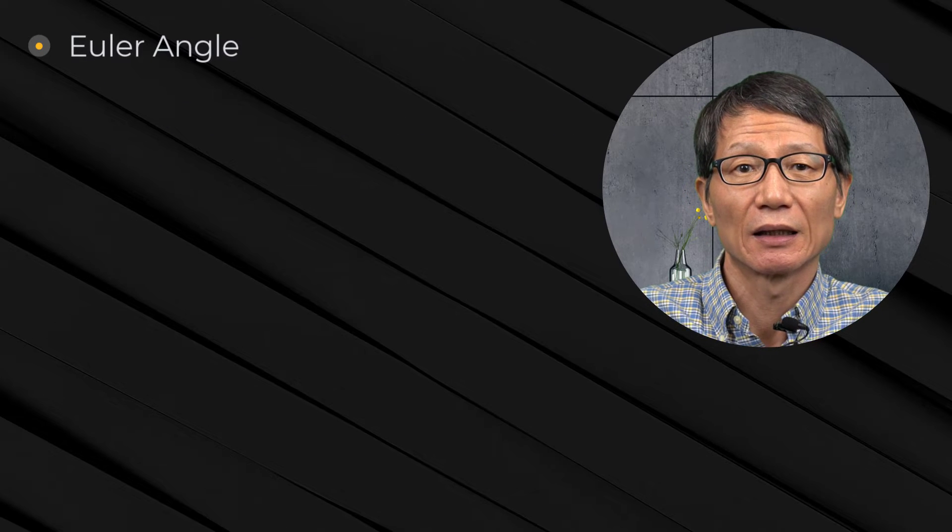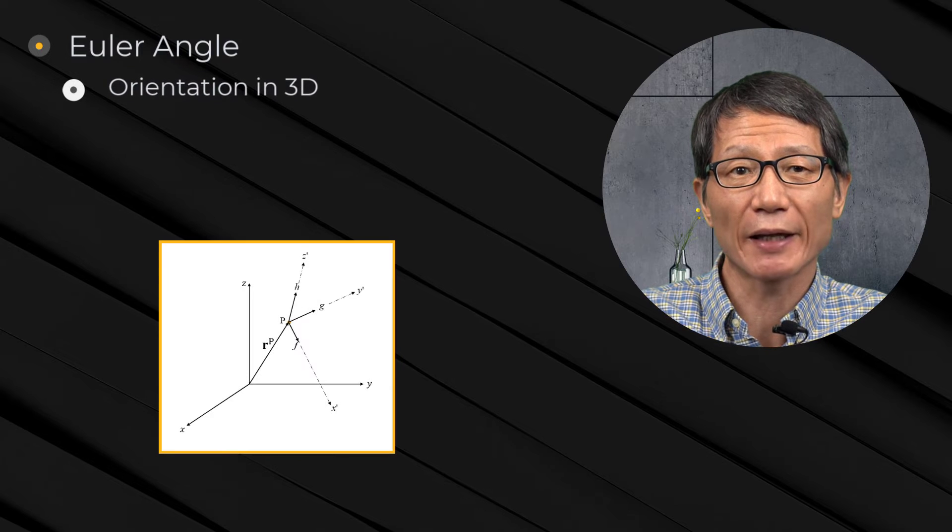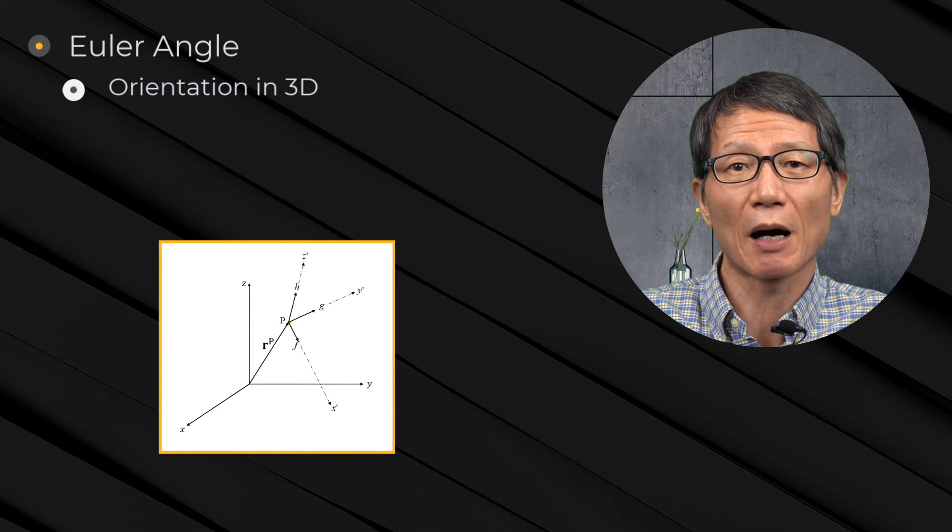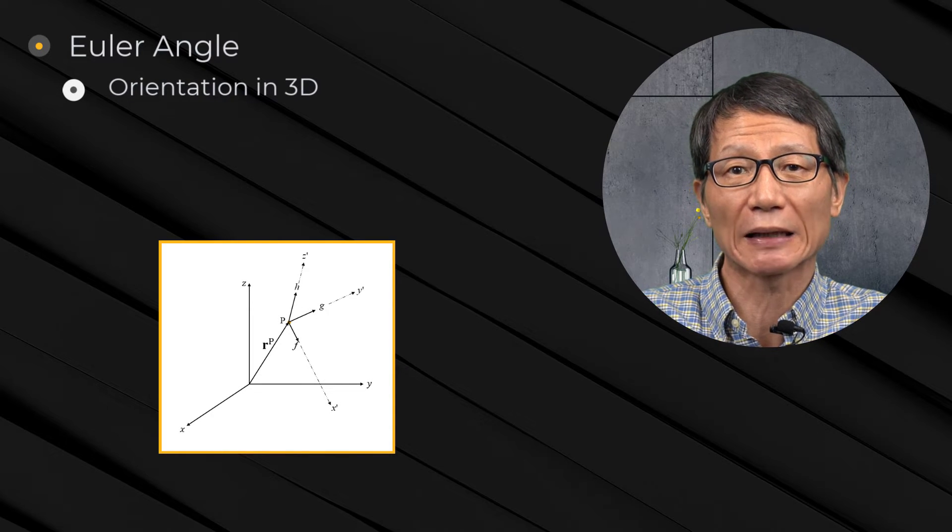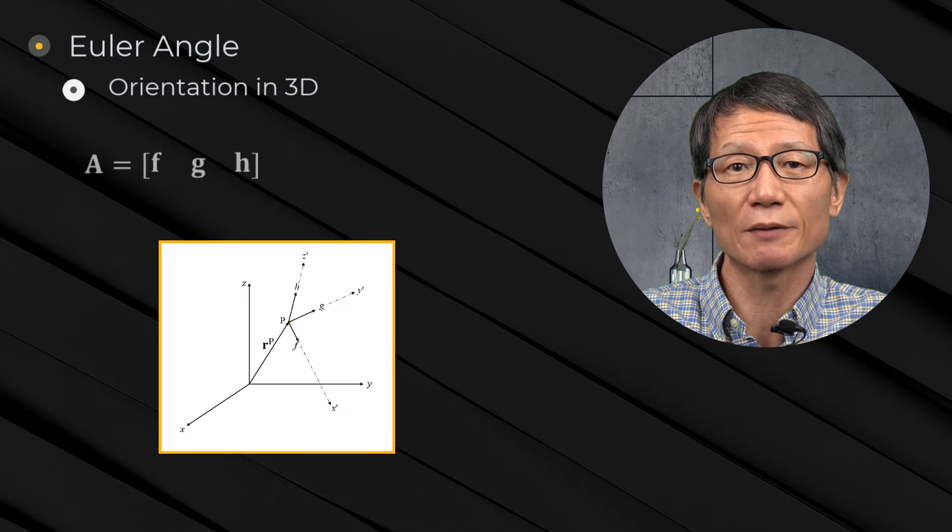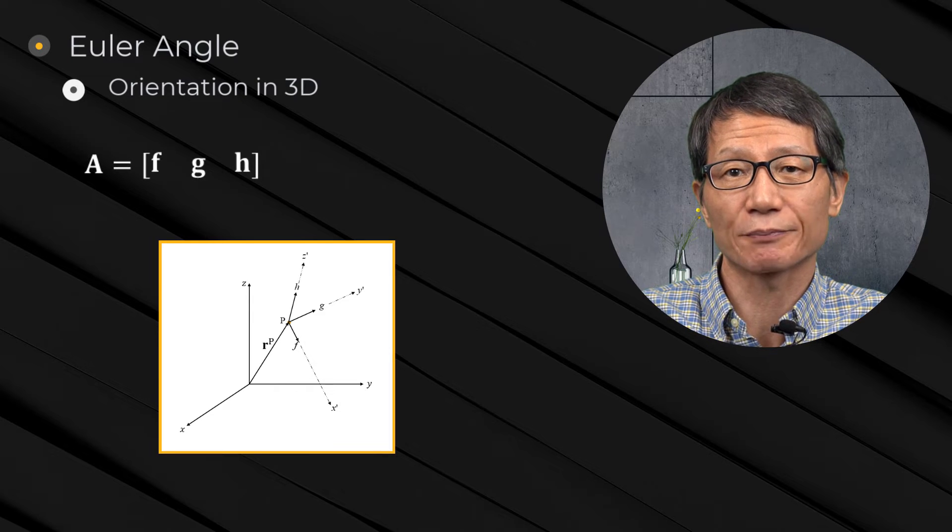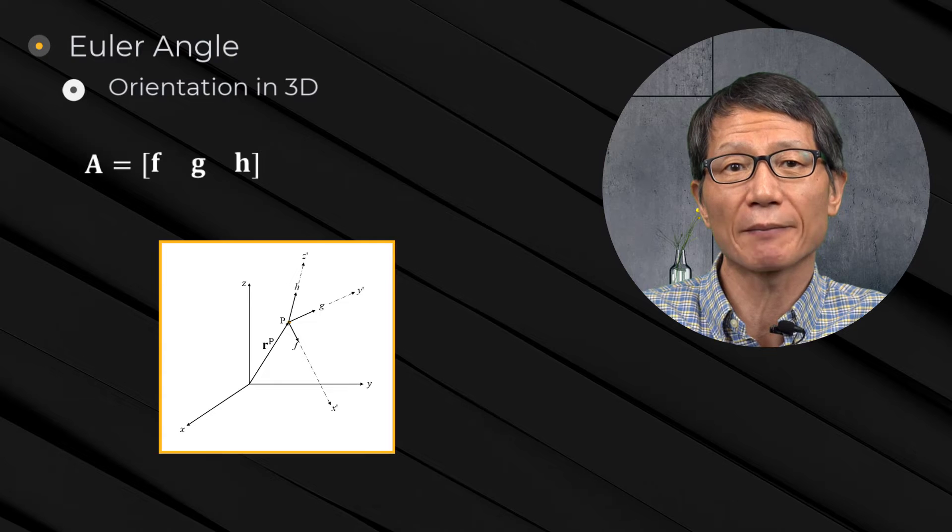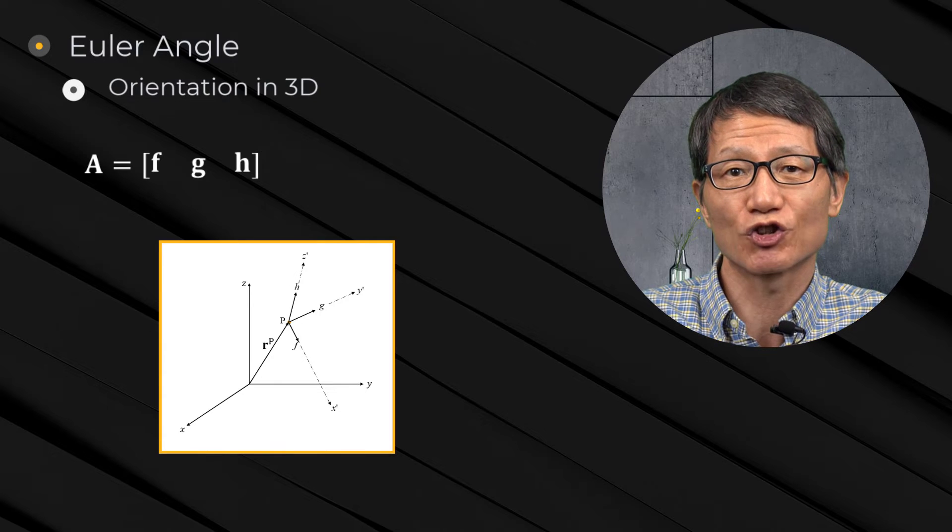Euler angle: a reference frame in space can be used to monitor the orientation of a body. Suppose unit vectors along x', y', and z' axes are f, g, and h vectors.